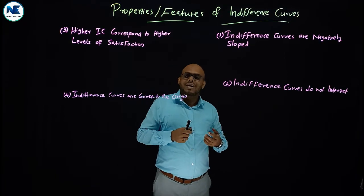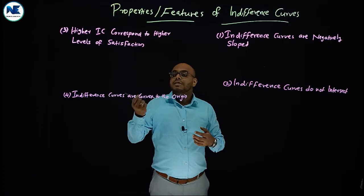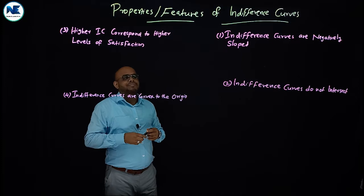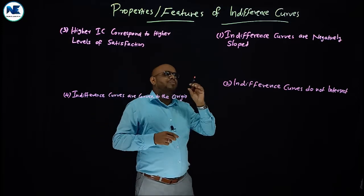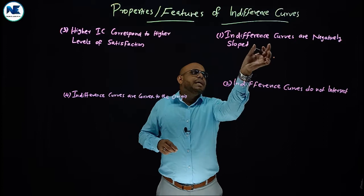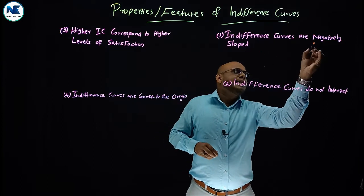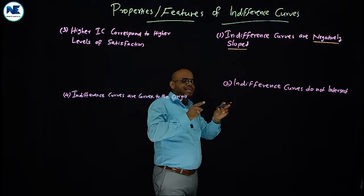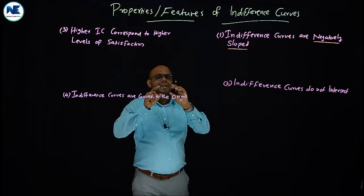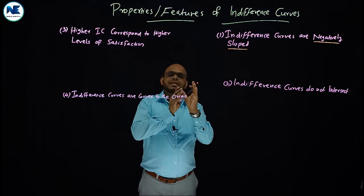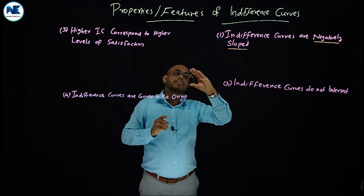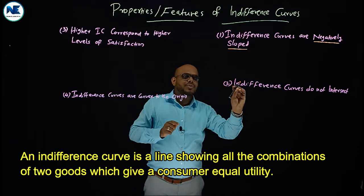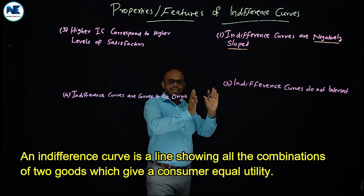For example, diminishing marginal rate of substitution, consumer equilibrium, indifference map and so on have been covered in previous videos. Let me explain the first property of indifference curve: indifference curves are negatively sloped. This is the keyword — negatively sloped. An indifference curve reflects various combinations of two commodities that provide equal utility or satisfaction to the consumer.